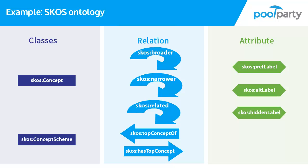This means that only resources that are of the class skos:Concept can have skos:prefLabels, skos:altLabels and skos:hiddenLabels. Now you can see that SKOS is a full ontology — you have classes, relations and attributes, and the different classes have different relations and attributes. One of the big advantages of using ontologies is that you can restrict the use of certain attributes and relations to certain classes. These restrictions are called domain and range restrictions.